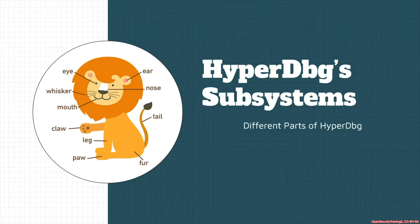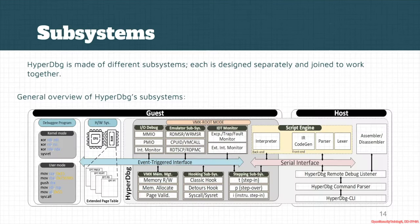Now let's go and see the different subsystems of HyperDBG. Every HyperDBG subsystem consists of different implementations — most of them use VTX or VMX features of the Intel processors — but most of them are completely designed separately and joined together to work together.